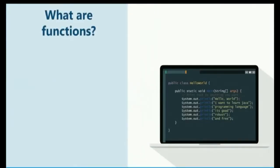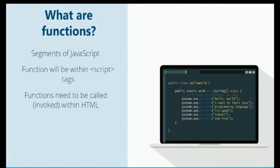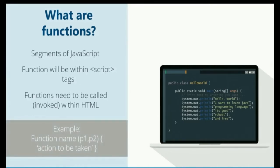Let's talk about what Java functions are. They are segments of JavaScript, and you will see them within the script tags within your HTML code. Functions need to be called or invoked with HTML — you need to let your HTML document know that you're going to be working with a function. That is why we put it within our script tag to say we're going to be running some Java code. You'll have your function name, then your parameters, and then you'll name what you're using, which would be your parameters — showing what it is you're trying to accomplish.